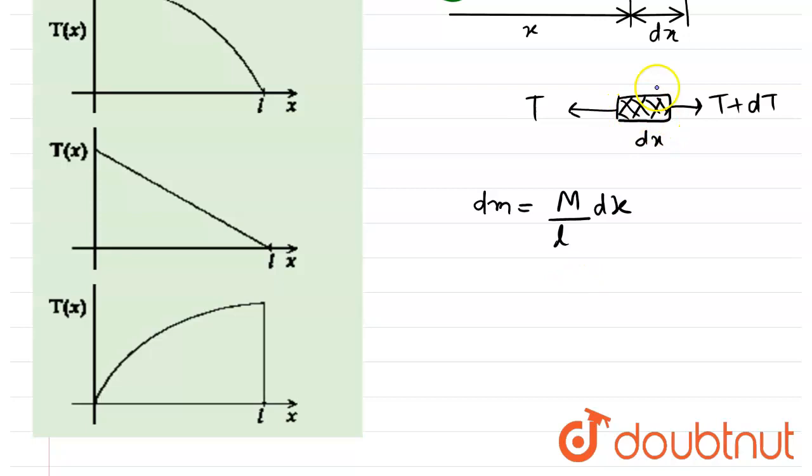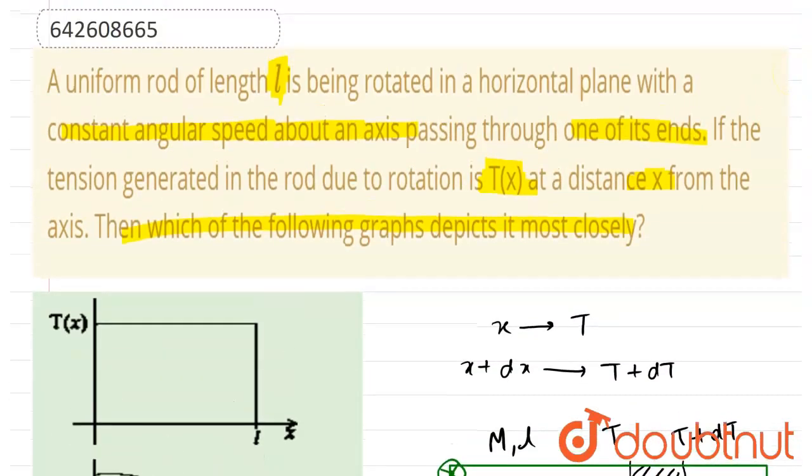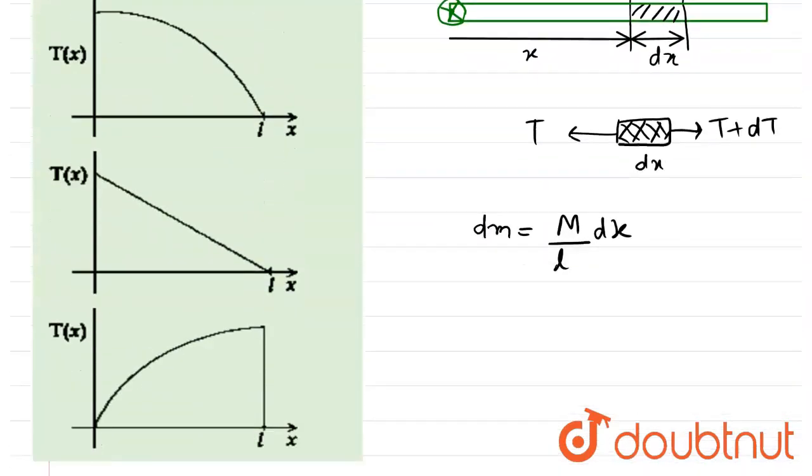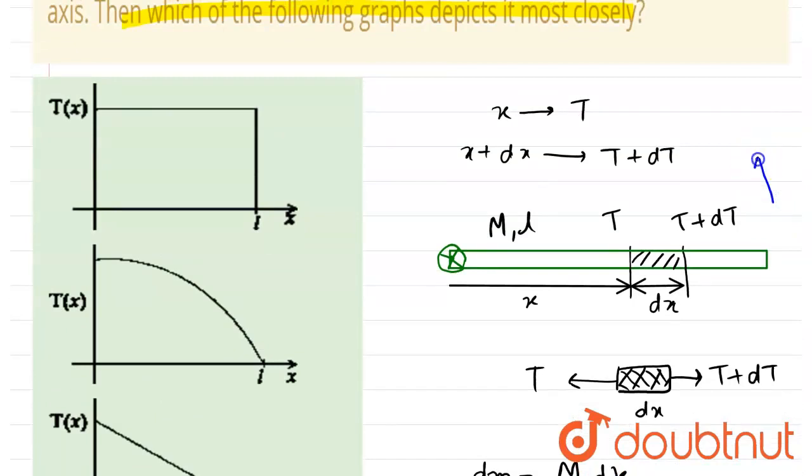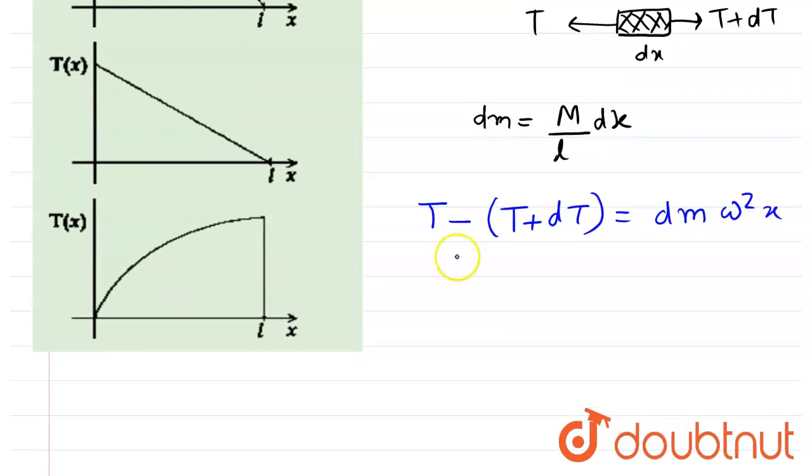The net force toward the center can be calculated as T minus (T+dT). It is also given that the rod is rotating with constant angular speed, so omega is constant. The net force toward the center for this small element equals dm·ω²·x.